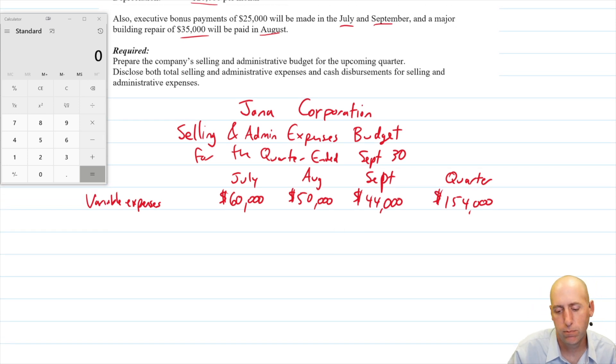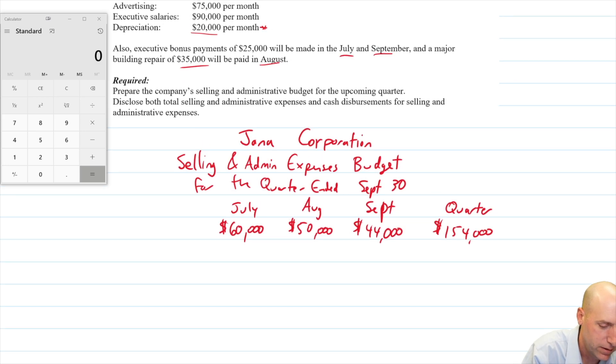That's our variable, oh my goodness, variable expenses is supposed to be a heading. Good grief. Variable expenses was a heading. This should all be down one, but we're going to be fine. Variable expenses was a heading. Then the first one is variable shipping.